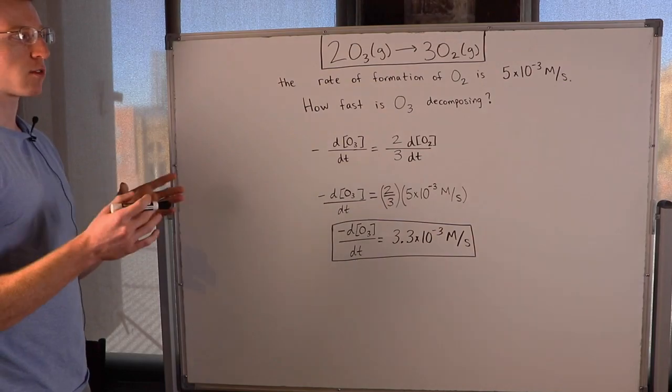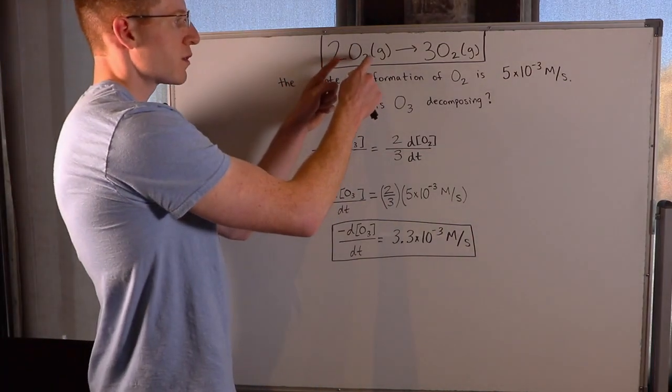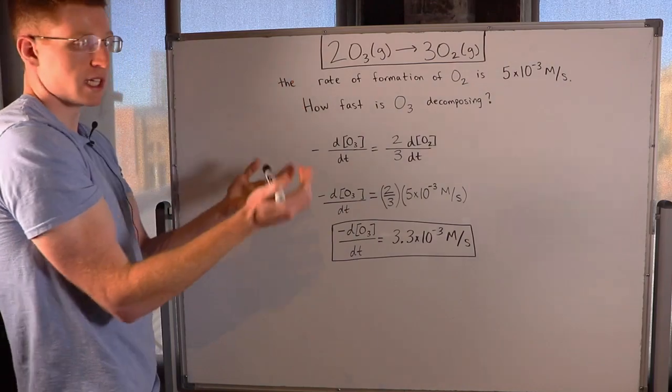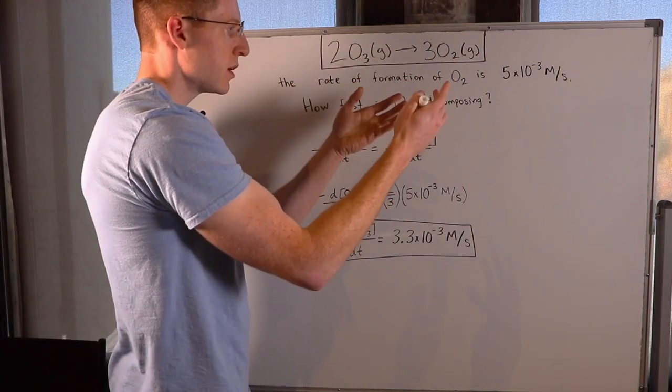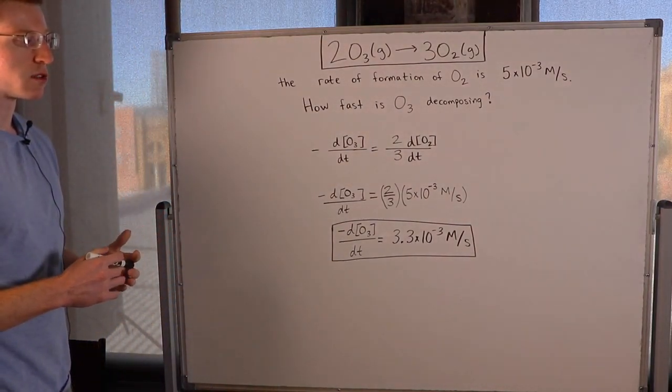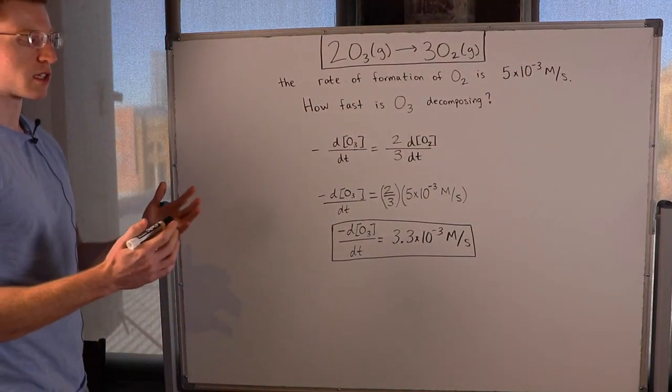So we know that in a general reaction like this we're changing from reactants into products. The reactants are decomposing or disappearing and the products are being produced or appearing. The way that you solve a problem like this is you set up a relative rates equation.